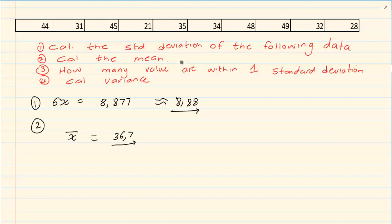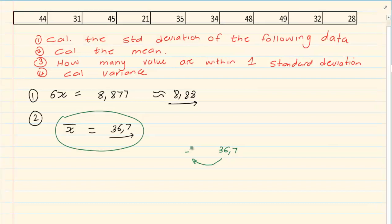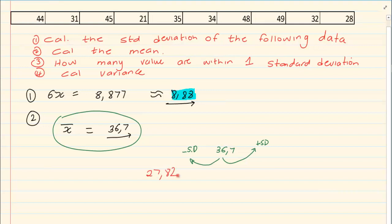The next question asks how many values are within one standard deviation. Whenever they talk about values within one standard deviation, it is always related to the mean. So we take the mean 36.7, subtract one standard deviation: 36.7 minus 8.88 equals 27.82. Then we add: 36.7 plus 8.88 equals 45.58.